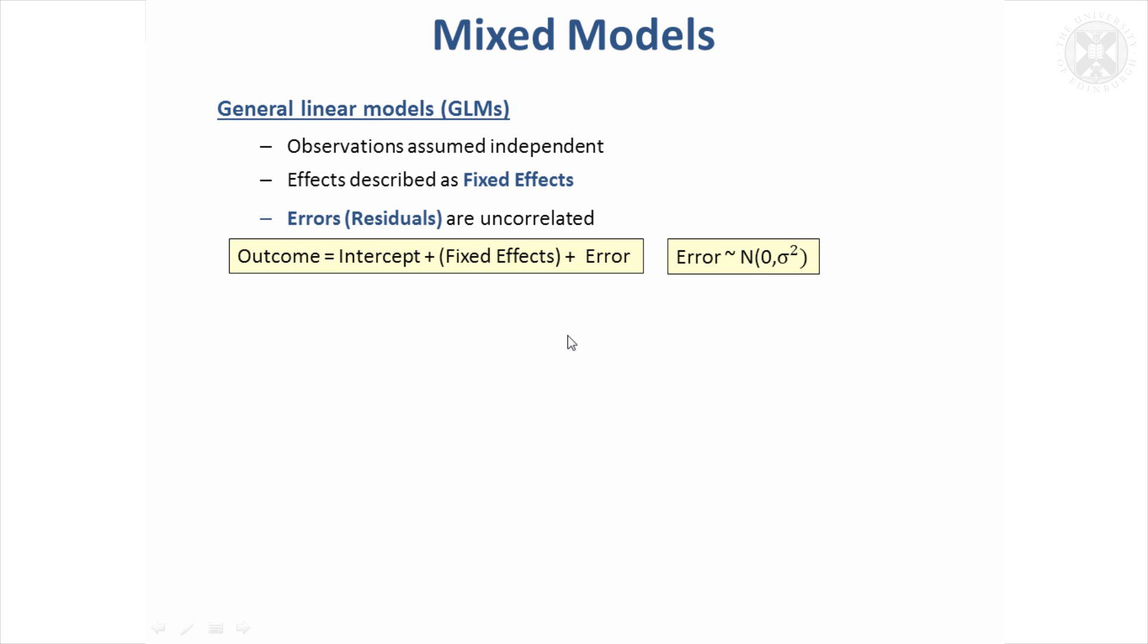So just to sort of put in a very simple way how the models are defined, if you've used things like regression or analysis of variance, you could kind of define the model like this, where you've got one outcome measurement, which is the thing you're interested in analyzing, and you would write an equation, this is in a very sort of shorthand format, I haven't given all the sort of parameters in the equation.